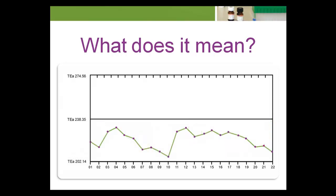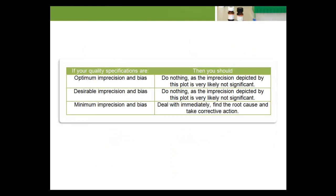What does it mean when a TE plot shows relative bias, where most of the points are higher or lower than the group mean? The importance of this bias depends on the level of quality chosen in the construction of the total error plot. Although action to improve bias should always be taken, the degree of response is in direct proportion to the quality specification used. In the case of minimum imprecision and minimum bias — the lowest level of acceptable performance — this bias must be acted on immediately, as any further deterioration could result in reporting patient test results containing too much error.